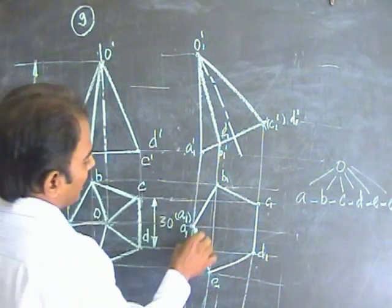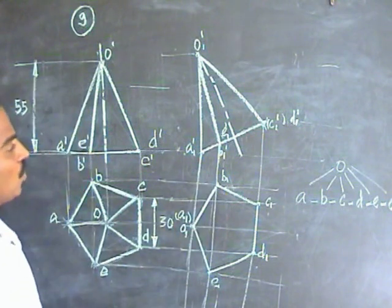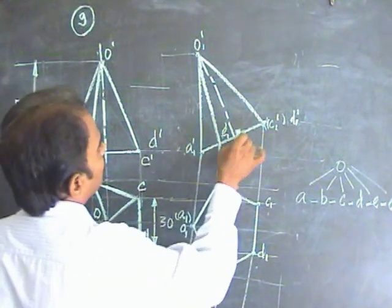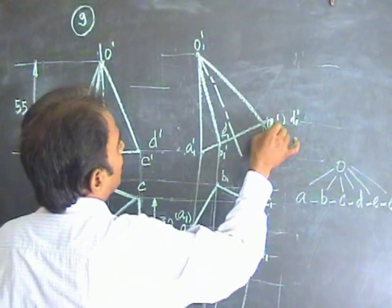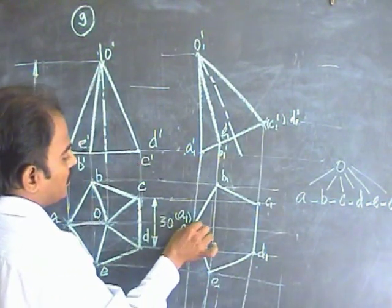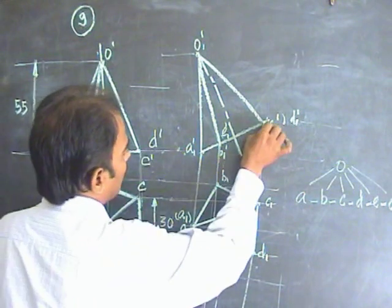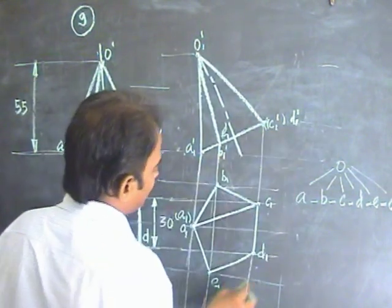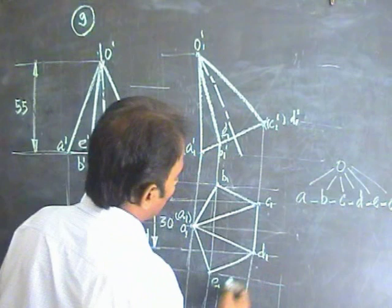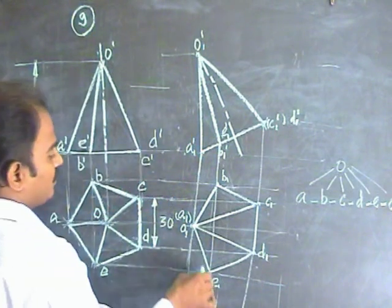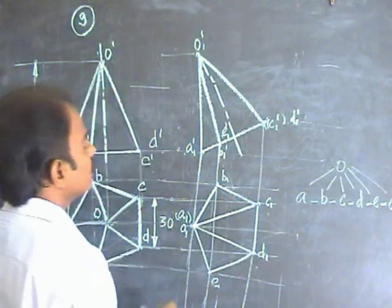OB is again edge, so you can leave it. OC is at the top, therefore OC is invisible. Join OC by a dotted line. OD is again at the top, therefore OD is invisible. Join OD by a dotted line. OE is edge, then leave it. This is the final topic.